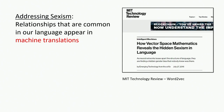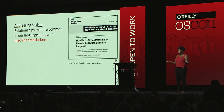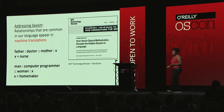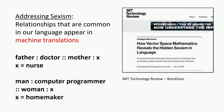If you help me finish these sentences: Father is to doctor as mother is to nurse. Man is to computer programmer as woman is to homemaker. This is a problem — this is an implicitly sexist bias that is found in our word relationships.